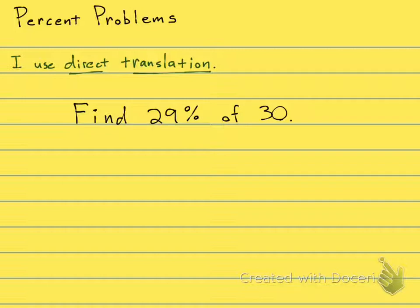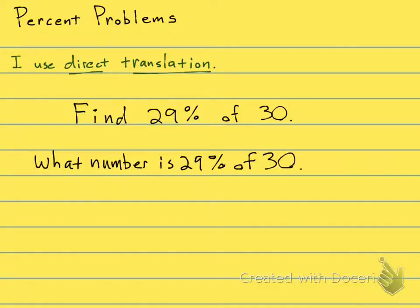But to make it fit direct translation, let me rewrite it. If you're saying to find 29% of 30, it's the same thing as saying, what number is 29% of 30? Okay, this fits a little bit better, the direct translation.